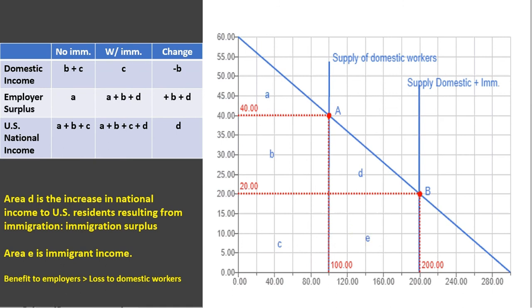This immigration surplus could be understated for one of two reasons. One, and I'll look into this in another video, if native workers or domestic workers complement immigrant workers, that could lead to increased productivity and higher wages for domestic workers.